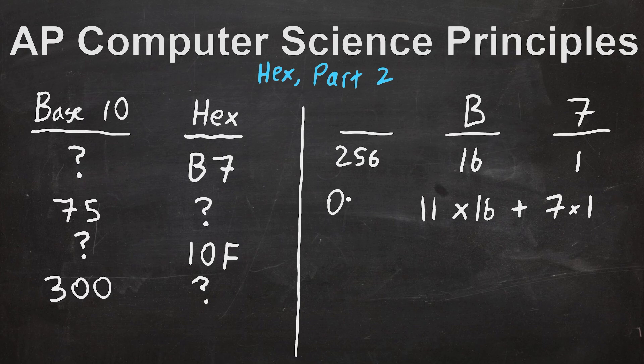There are also 0 256s, if we care, which we don't, but it's true anyway. 11 16s and 7 1s. I happen to know that 11 times 16 is 176, but I do encourage the use of calculators if you don't like doing that kind of mental math. Plus 7 is 183. So B7 is 183 when written in base 10.